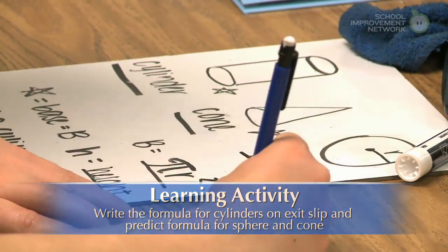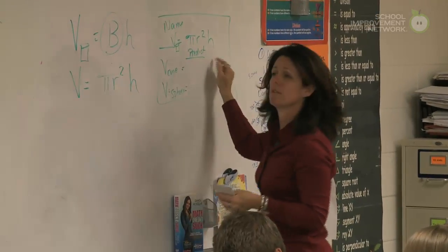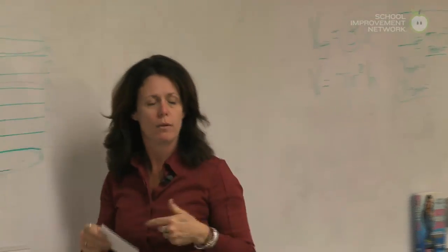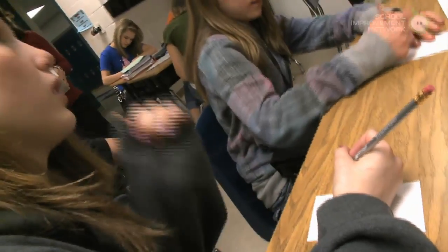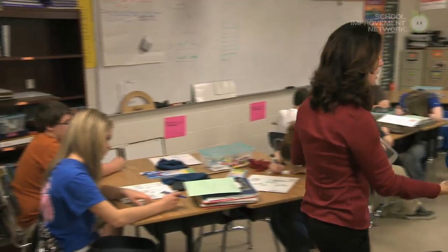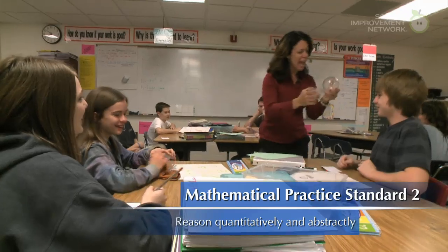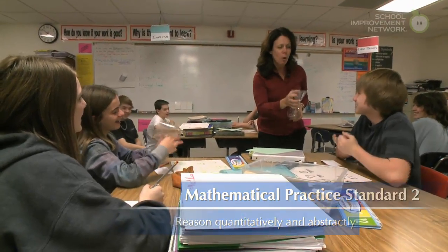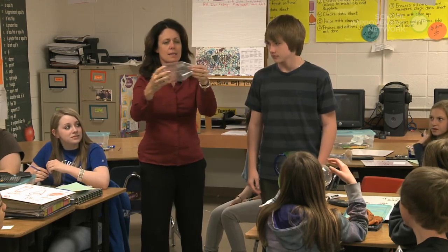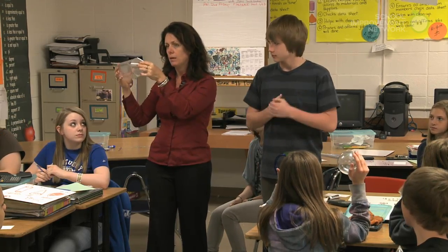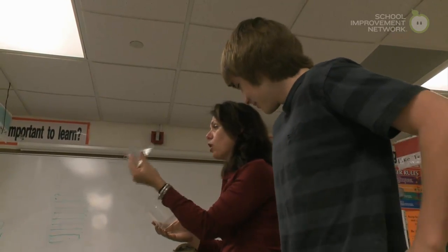She then asks students to predict the formulas for a sphere and cone in relationship to a cylinder. The reason we spend so much time on the cylinder formula is because that's the most important one. If we can remember that one, we won't have to memorize the other formulas — we'll just know them. First, can you pour water really well? One thing I want to check is that the cylinder and the cone top have the same circumference. This relationship only works if the base areas are exactly the same.